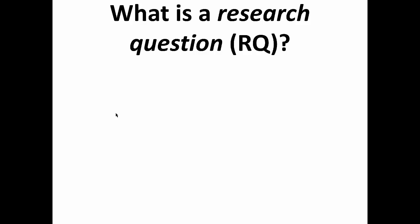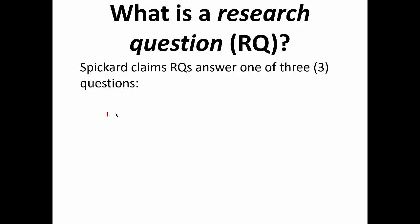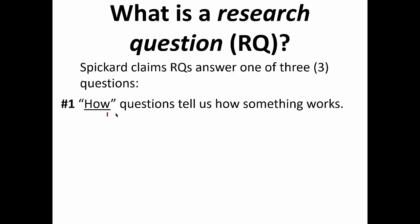According to Spickard — though I don't totally agree with this — research questions answer one of three types. The first is what he calls a how question: they tell us how something works. For example, how does a toxic oil spill affect tourism in an island community dominated by tourism? Or how does rain shape the formation of coastlines? How questions tell us how something works — for example, how do avalanches happen in heavily deforested mountain regions?